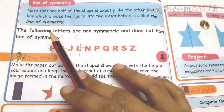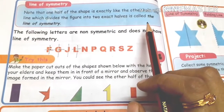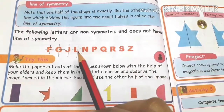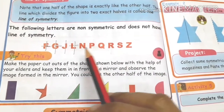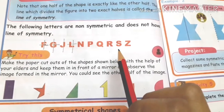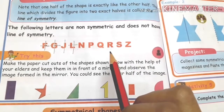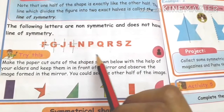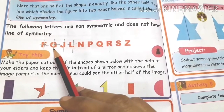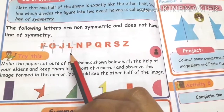The line which divides the figure into two exact halves is called the line of symmetry. The center line is the line of symmetry. In contrast, some letters are non-symmetric letters. For example, F and G are non-symmetric — these are non-symmetric letters.